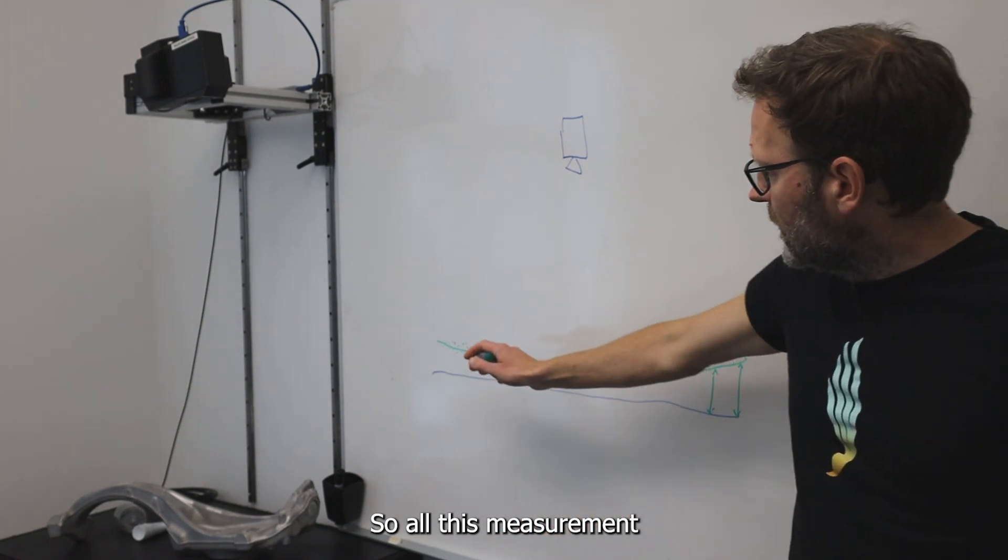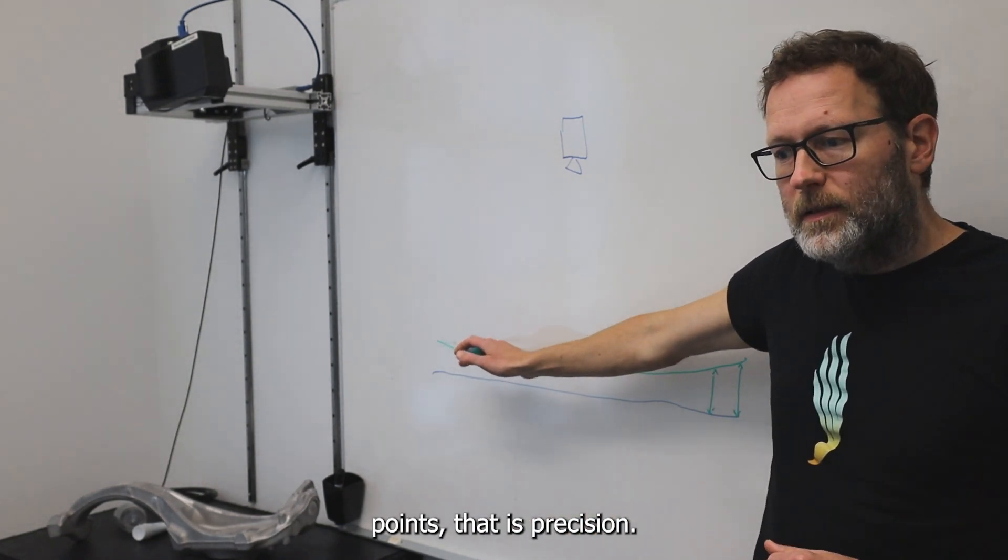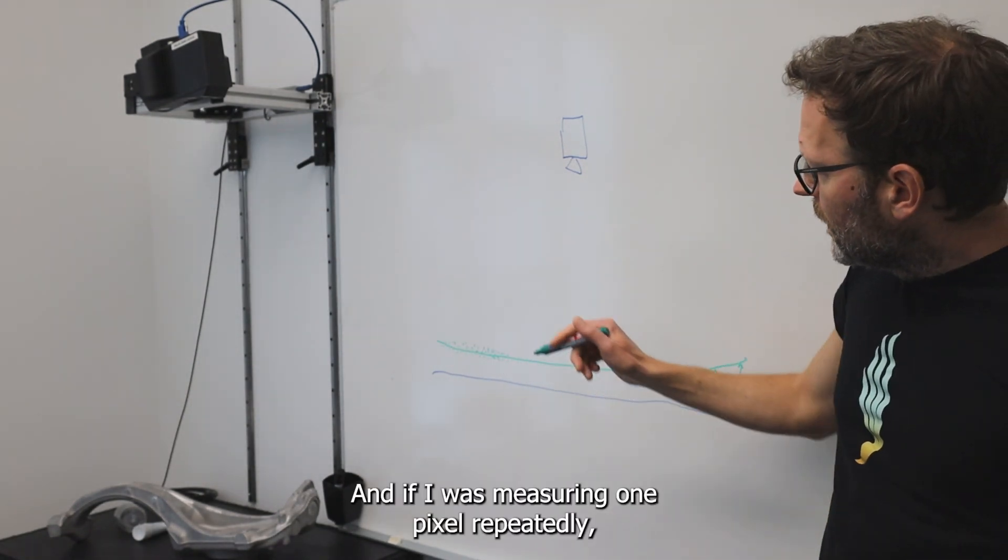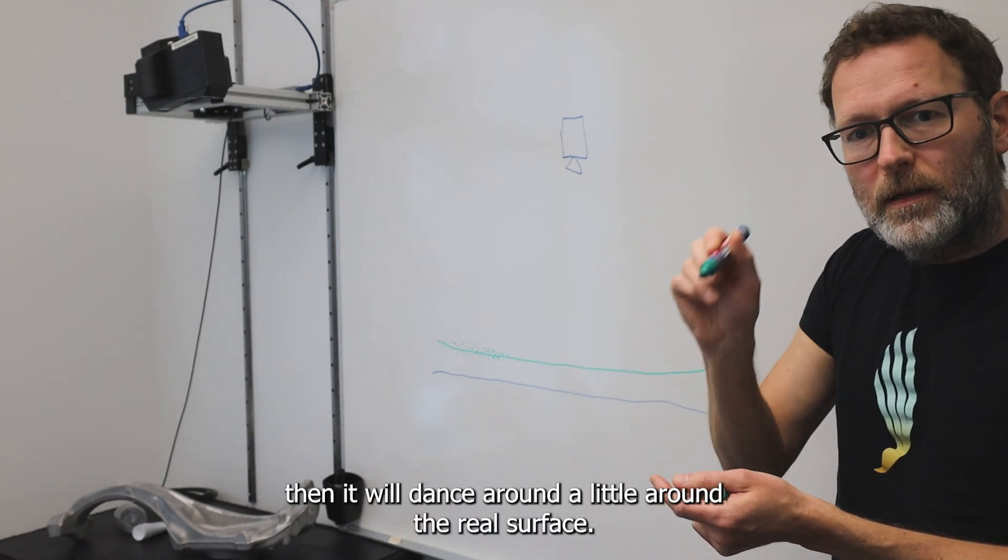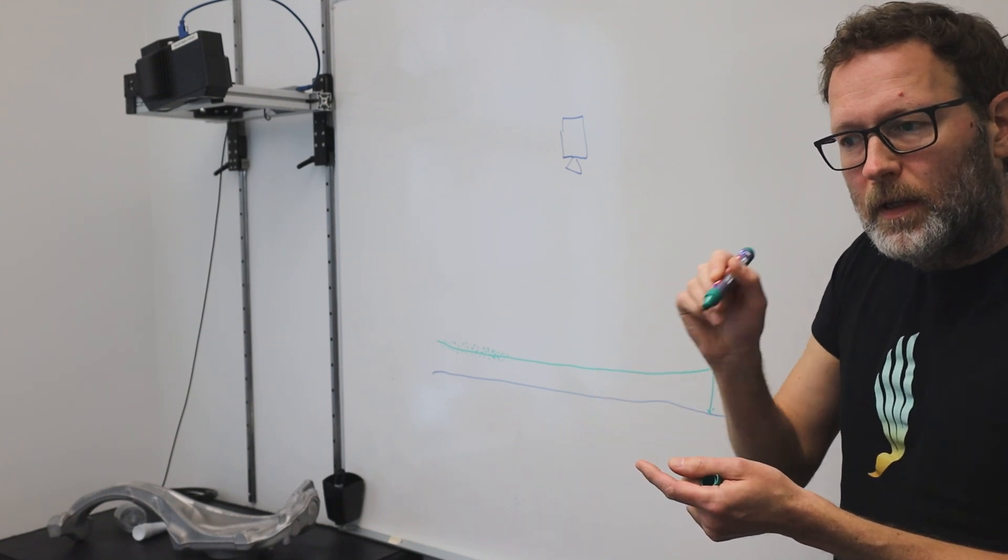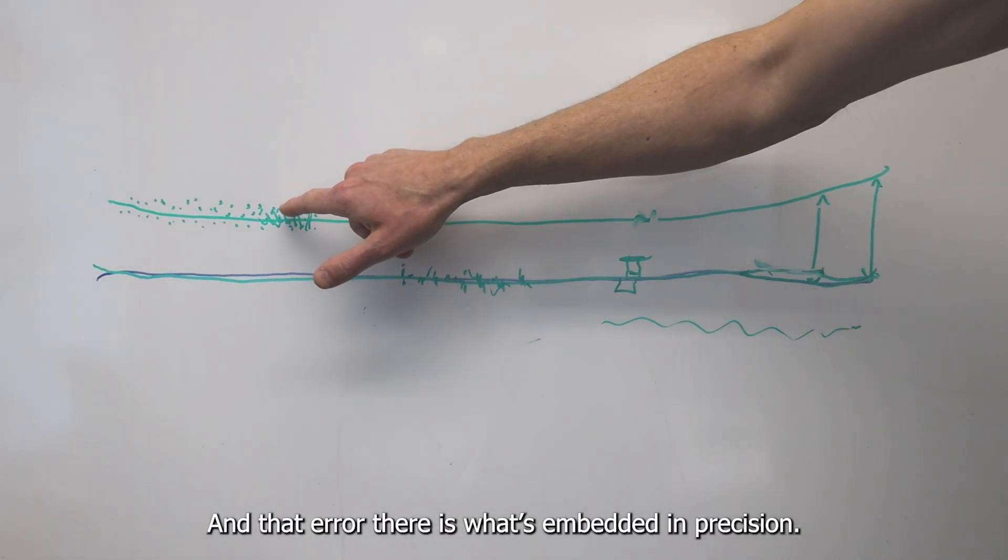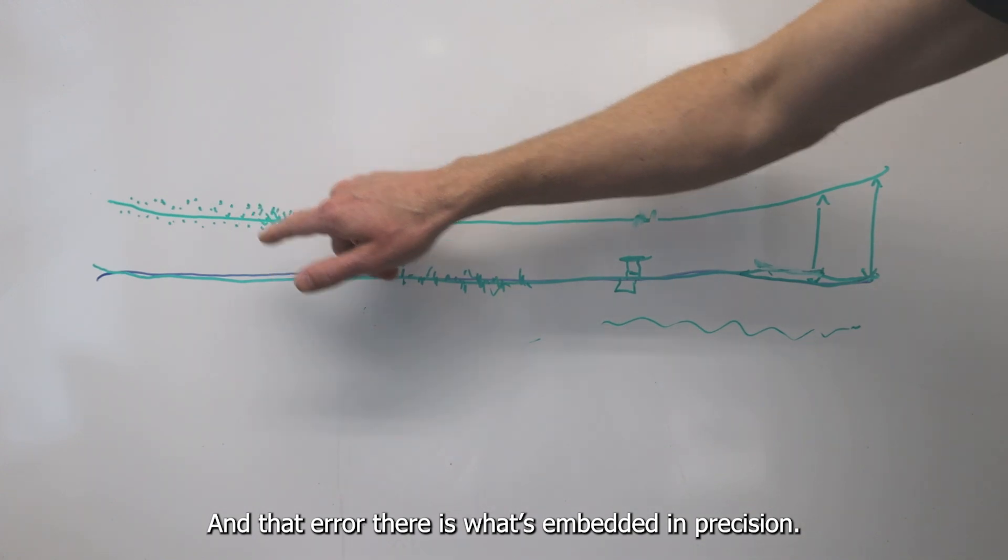So all these measurement points, that is precision. And if I was measuring one pixel repeatedly, then it will dance around a little, around the real surface. And that error there is what's embedded in precision.